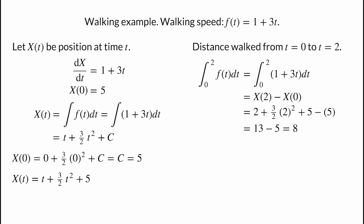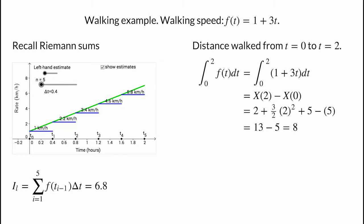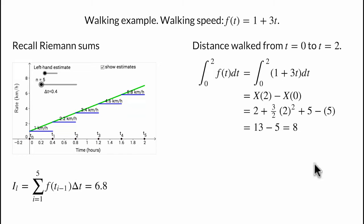This calculation was quite a bit easier than using Riemann sums, but let's review how we would calculate the distance using Riemann sums to appreciate the work the fundamental theorem saves us. Here is a plot of f of t in green, with your walking speed starting at 1 kilometer per hour and increasing steadily to 7 kilometers per hour after 2 hours. The graph shows a left-handed Riemann sum with 5 intervals, estimating your speed at increasing steps from 1 to 5.8 kilometers per hour. When we add up these 5 rates multiplied by the time interval width of 0.4 hours, we get an estimate of 6.8 kilometers — a bit short of the real answer of 8 kilometers, because we underestimated your speed in all intervals.